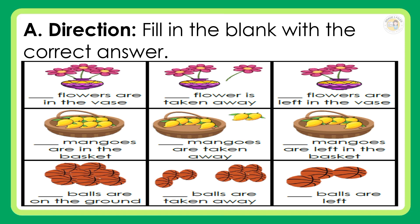Direction: Fill in the blank with the correct answer. Flowers are in the vase. Flower is taken away. Flowers are left in the vase. Mangoes are in the vase. Mangoes are taken away. Mangoes are left in the vase. Balls are on the ground. Balls are taken away. Balls are left.